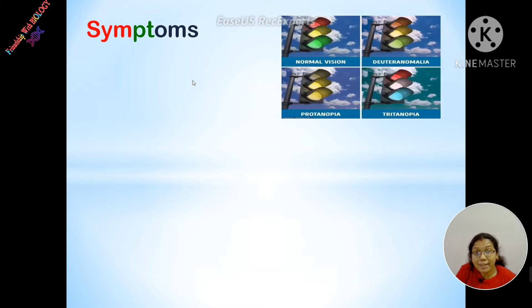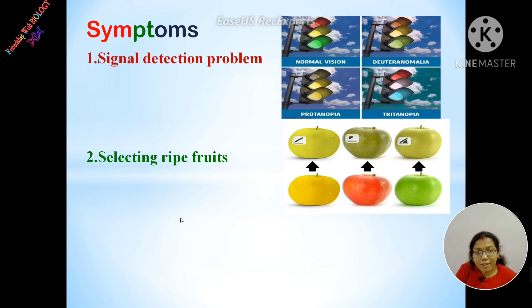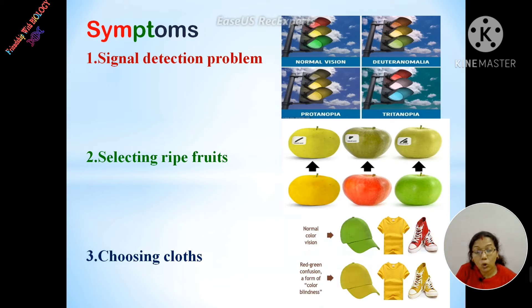What are the symptoms of color blindness? The first symptom is signal detection problems. Normal people can see the exact three colors of a traffic signal, but colorblind people cannot see the exact color of the signal. Colorblind people also face some problems in selecting ripe fruits. When colorblind people go to a shop or shopping mall to buy clothes, they face some problems choosing the right color.